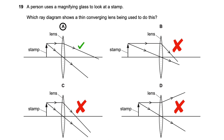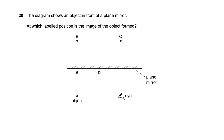Question twenty shows a diagram of a mirror. We are looking at where the image appears. The image in a mirror appears directly opposite the object, so position B is correct. The ray from the object reflects and we see a virtual image at position B, which is the right answer.